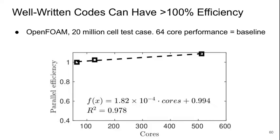If you have a really well-written code, you can actually achieve greater than 100% parallel scaling efficiency. I tested this with OpenFOAM using a 20-million-cell problem with 64 cores as the baseline. When I went to 128 cores and 512 cores, on a per-core basis the calculation actually got faster. This is really impressive and a sign of how well-written OpenFOAM is.